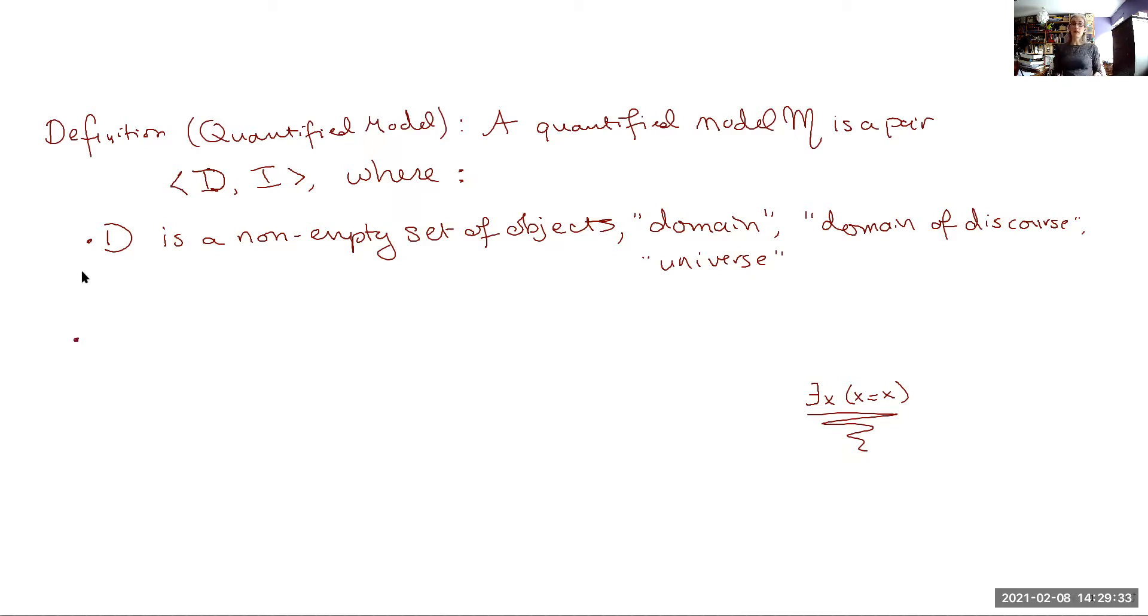The more interesting part of the model, of course, are the interpretations. So I is going to function as an interpretation that functions very much like it does in the categorical setting. So it is an interpretation function such that for every constant symbol C, the interpretation of C is some object in the domain.